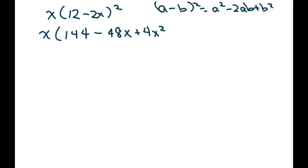All right, so therefore, let's go ahead and distribute the x. You get 144x minus 48x squared plus 4x cubed.